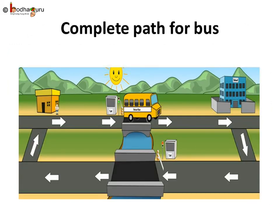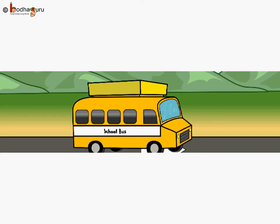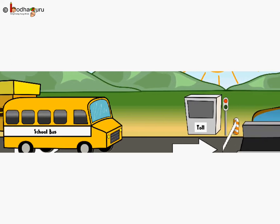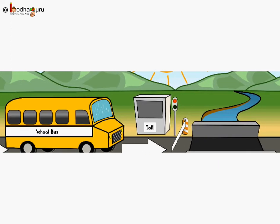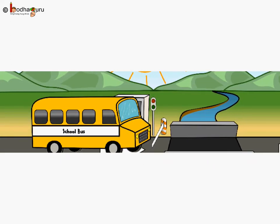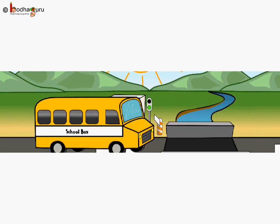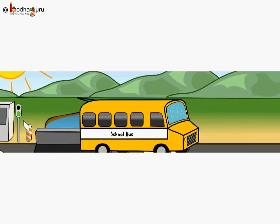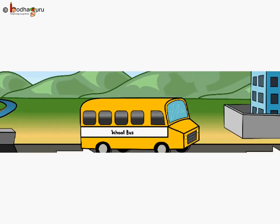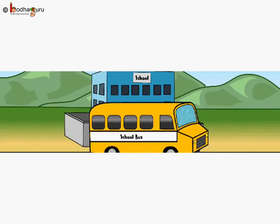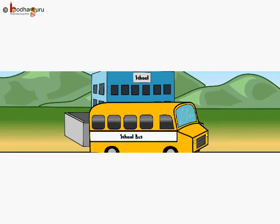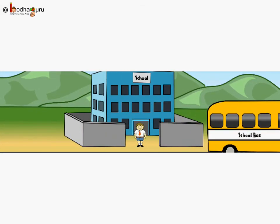Let us see the complete path which the bus followed, starting from Aman's home and reaching back there. The bus started from the bus stop near Aman's house and reached the school using the bridge A. As it is one way, the bus has to use the other way to reach back to Aman's home.